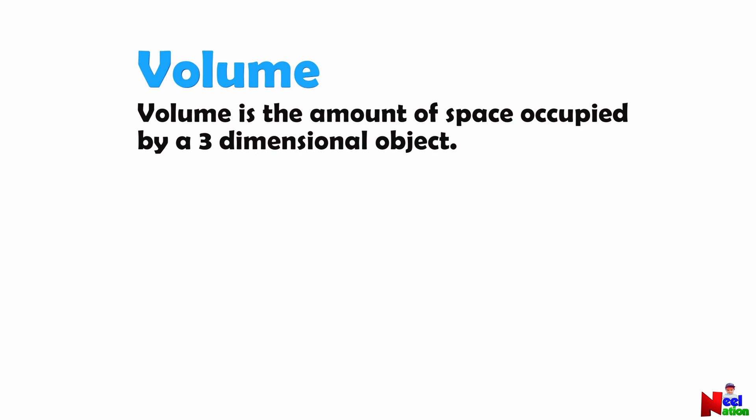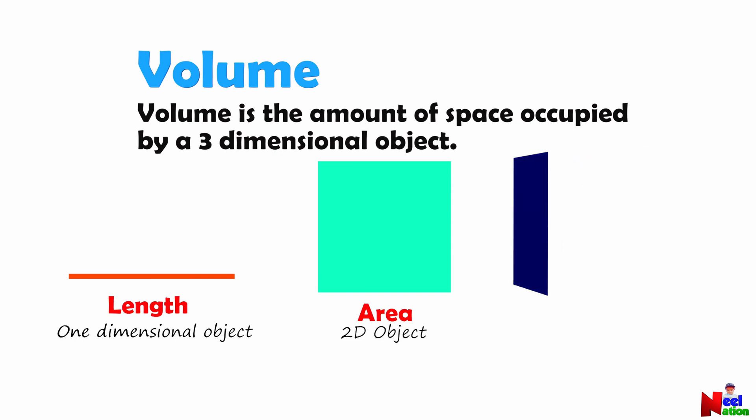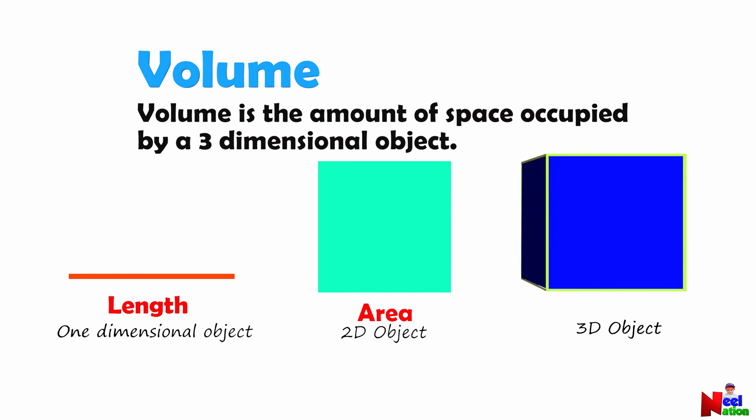I want to know more! For a one-dimensional object, we can measure its length. This flat square plane has two dimensions, and area is the amount of space occupied by a 2D object. But for a three-dimensional object, volume is the amount of space that it takes up.